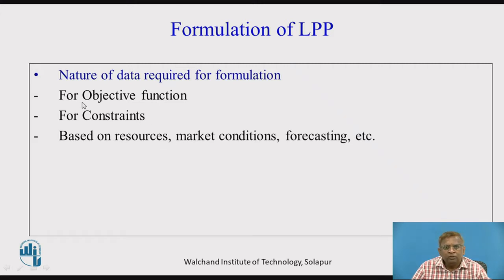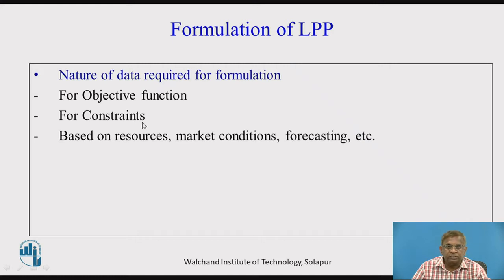Linear Programming Problems have two main things. One is the objective function, which represents something that is to be achieved. The second is subjected to a certain set of constraints, which represent the limitations or restrictions of different resources. Now, how do we get these two things?